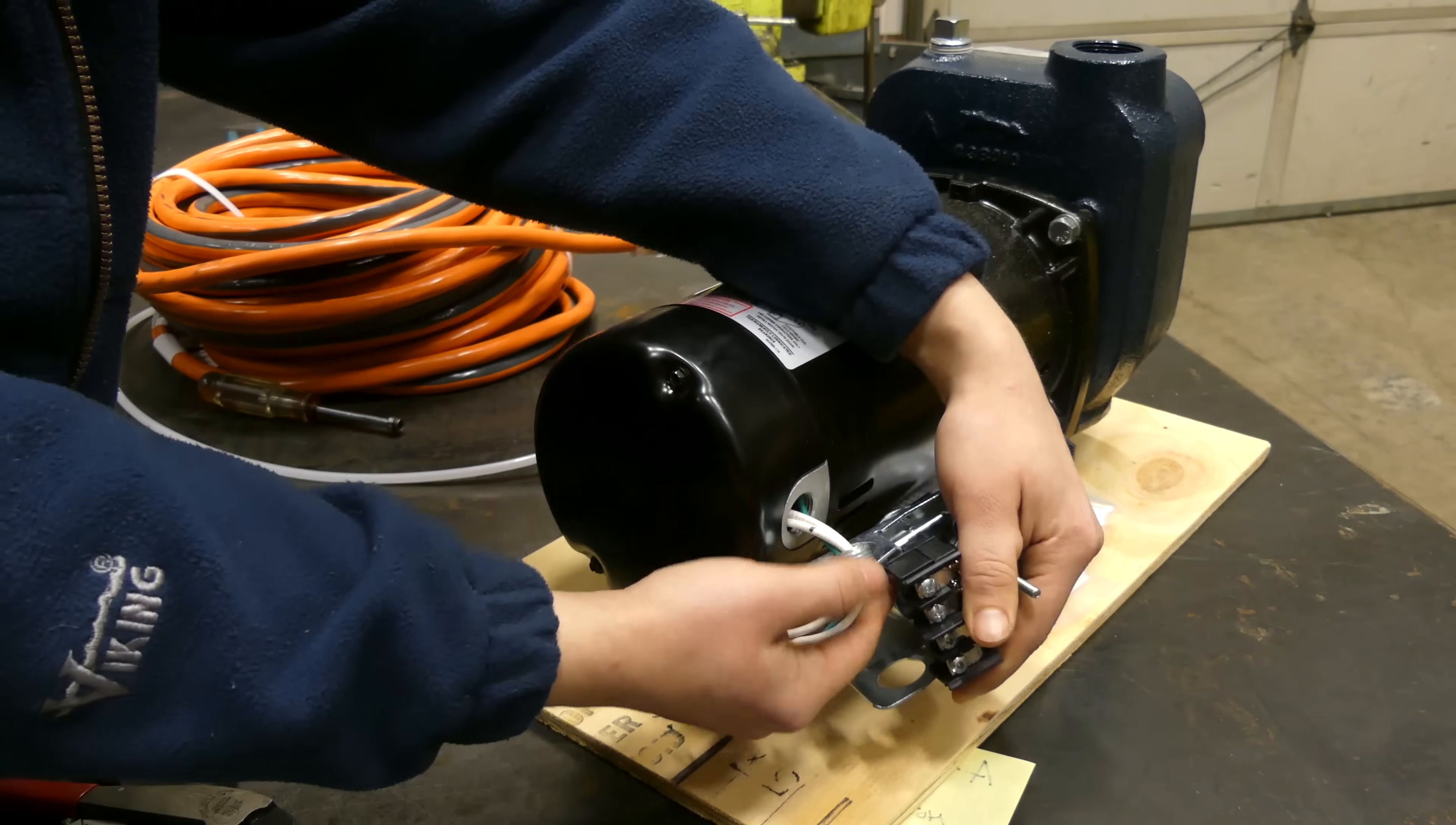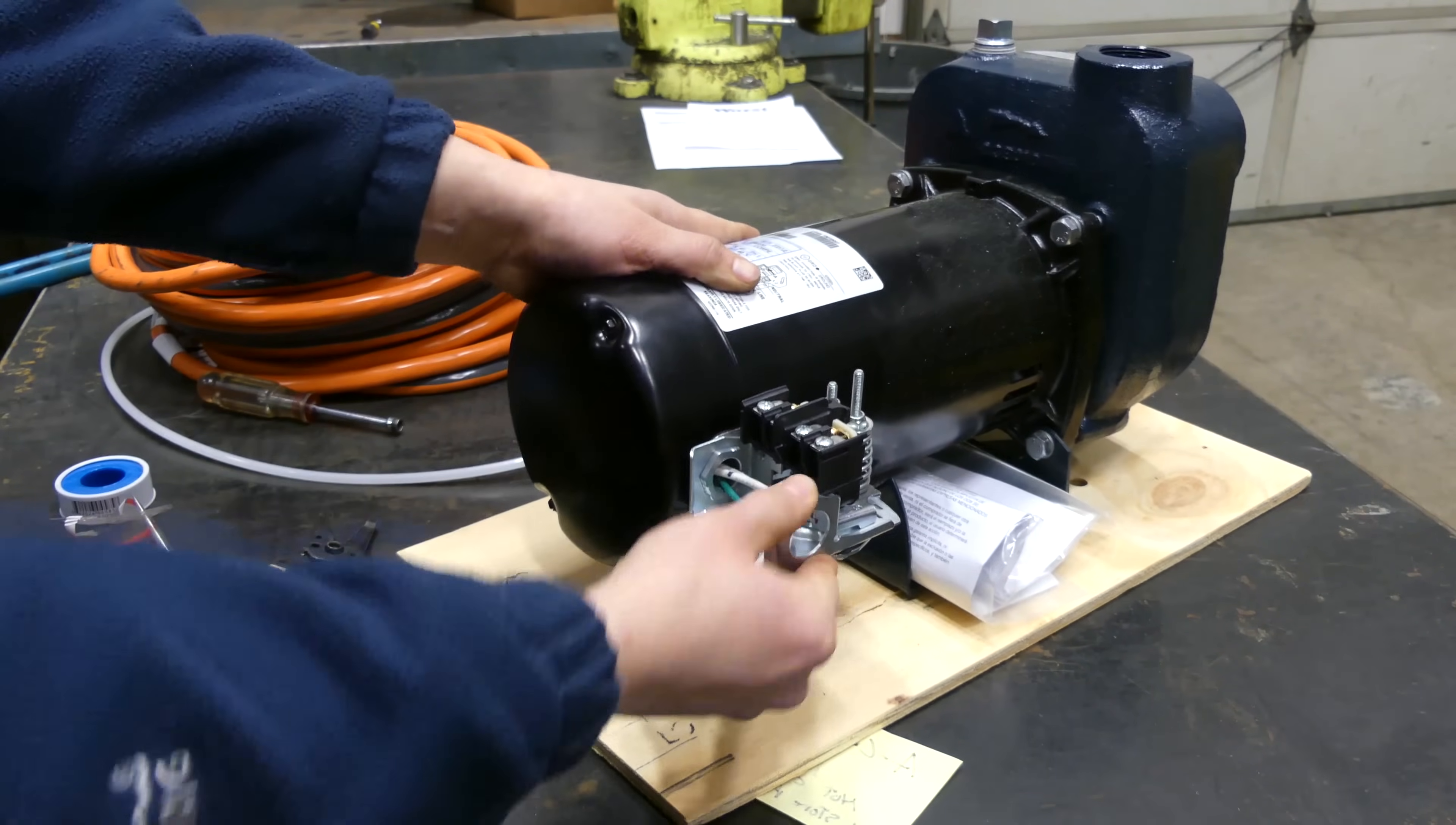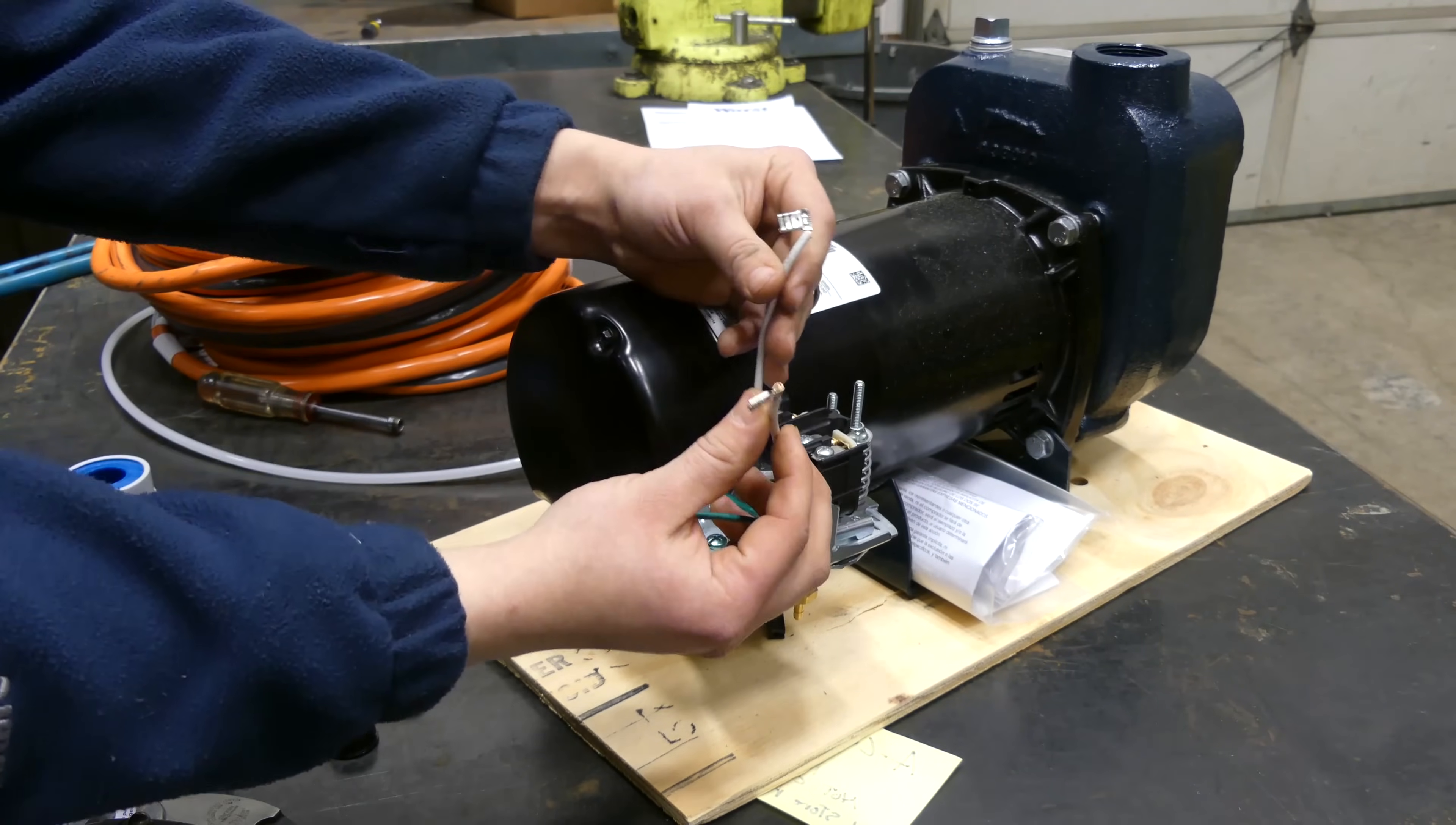This just runs through the side of the pressure switch, and then it threads in directly into the motor here. Let me just get that nice and finger tight in there. This doesn't have to be super tight. I mean, it just serves the purpose of keeping the pressure switch on there and in place.